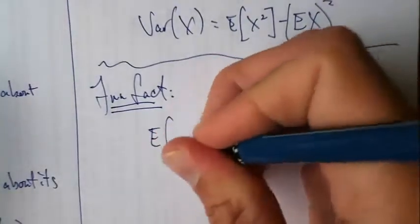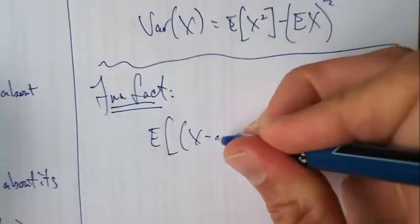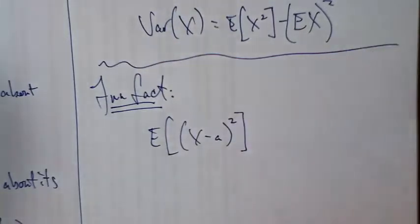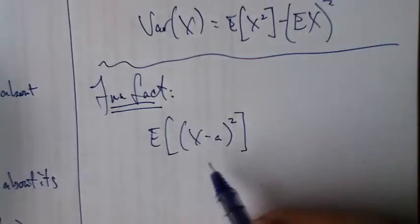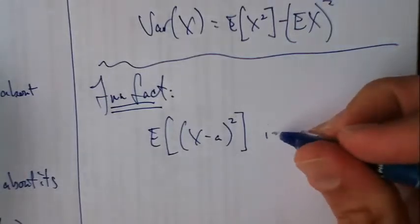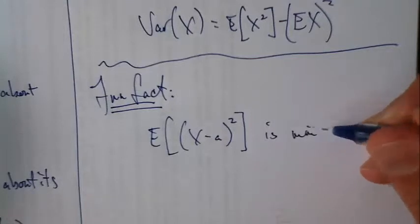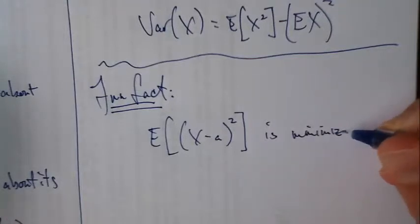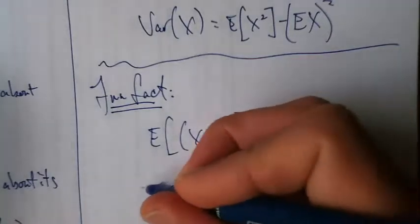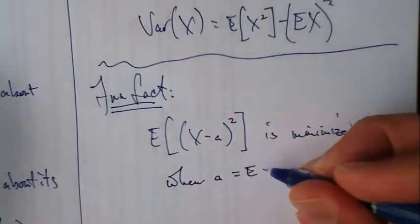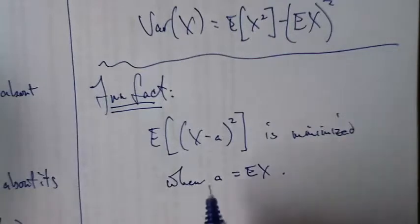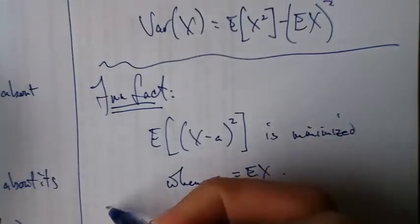The expected value of X minus a quantity squared, if I take the second moment of X, of the random variable X about the point a, this quantity is minimized when a equals the expected value of X. You can prove that, you can do it, I know you can, give it a shot.